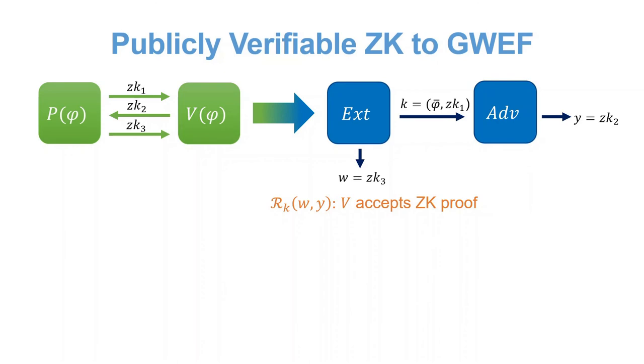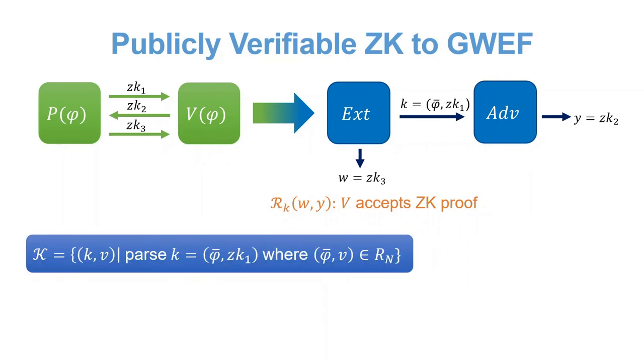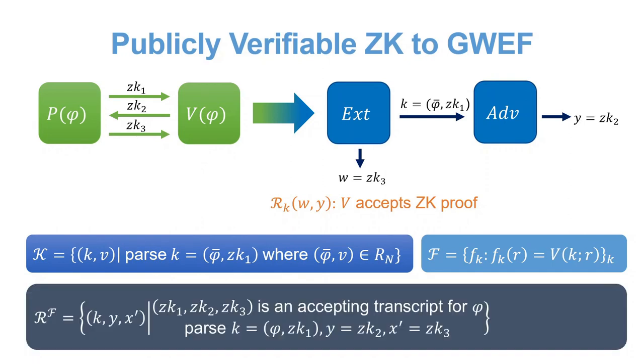So, as we have mentioned, the valid keys are no instances along with the first zero-knowledge message where a witness to the no instance proves the key's validity. The functions are in fact the responses from the verifier given the key and some randomness. The hard relation is now a set of key images and their witnesses, where a witness to an image is a third message in the zero-knowledge protocol that results in an accepting transcript when parsing the image and key appropriately.